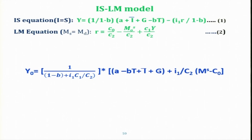What I am showing here is the IS equation where the product market is in equilibrium: investment equals saving. This is the IS equation. The LM equation is where money supply equals money demand — that is money market equilibrium. In order to find macroeconomic equilibrium where both the product market and money market are in equilibrium, we can find out the equilibrium level of rate of interest and equilibrium level of income.